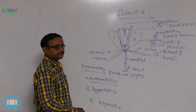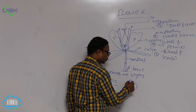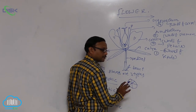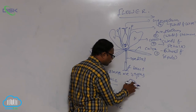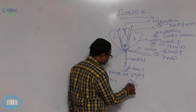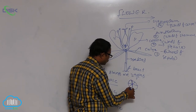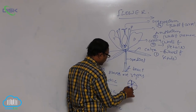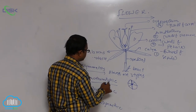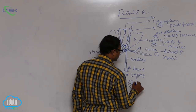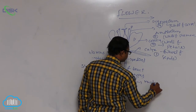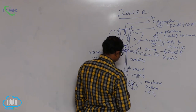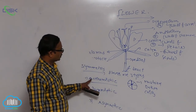An actinomorphic flower can be divided into two equal parts by any vertical direction passing through the center. Examples of actinomorphic flowers include mustard, datura, and chili. Most flowers are actinomorphic.